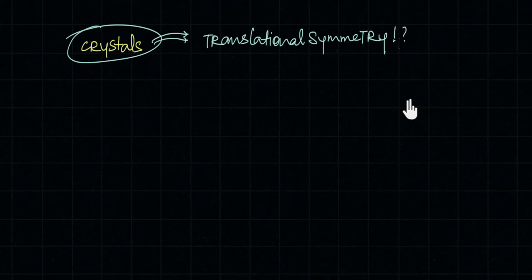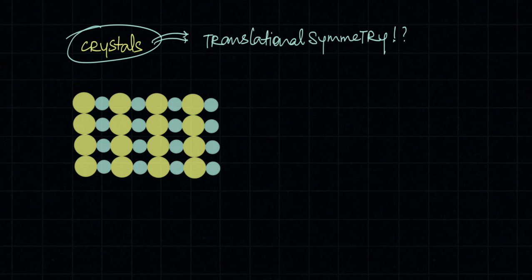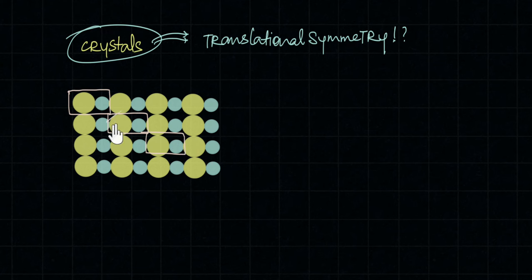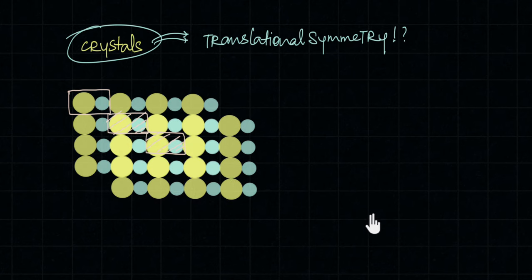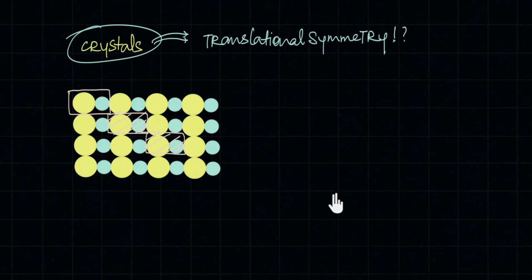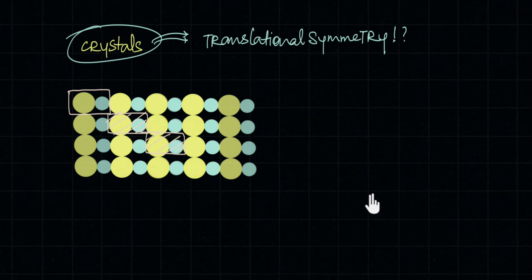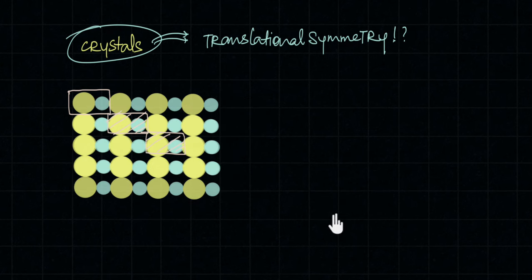Let me explain translational symmetry using this two-dimensional crystal. This crystal is made of two atoms A and B, and this AB unit is repeated throughout the crystal in a very ordered way. If this crystal were infinite in all directions, the pattern observed standing on one unit would be exactly the same as standing on any other. If I translate the crystal from one repeating unit to another, the crystal remains exactly the same — that is translational symmetry.